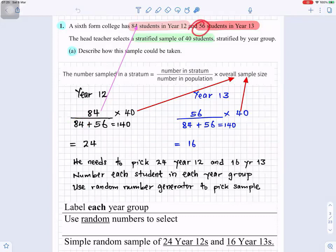Plus 56 students, so 84 in Year 12 plus 56 in Year 13 gives us a total of 140. Overall sample size is 40. So it's 84 divided by 140 times 40. That means 24 Year 12 students we're going to select. Let's go to Year 13.